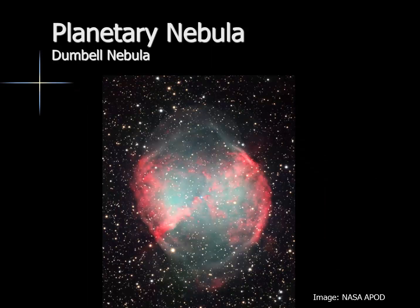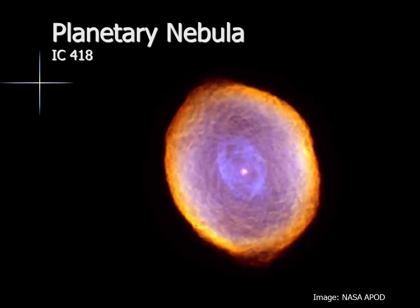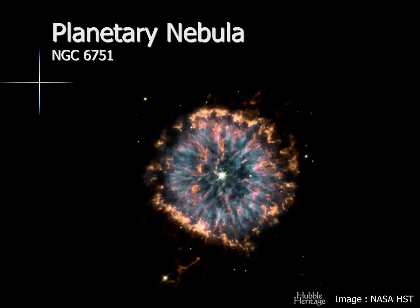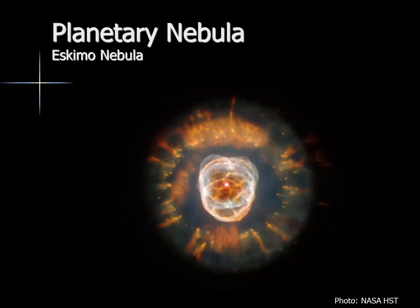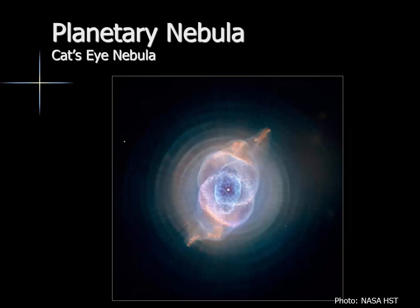Here is an image of the Dumbbell Nebula, again a planetary nebula. You can see the star in the center is the one shedding its atmospheric gases. Here we see IC-418, another planetary nebula imaged by the Hubble telescope, and NGC 6751. Many of these planetary nebulas take on unique and very complex shapes. The shape may tell something about the motions of the star as it was undergoing its final phases of existence. Finally, this image of the Cat's Eye Nebula helps us see that the star may have had some unique rotation as it was shedding its atmospheric gases.